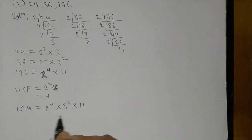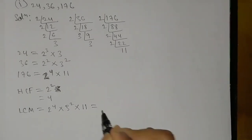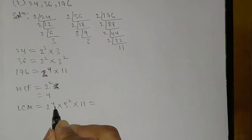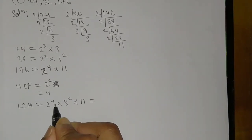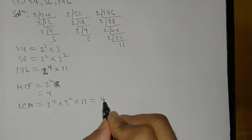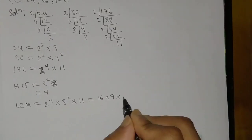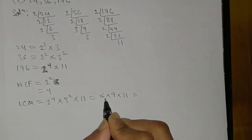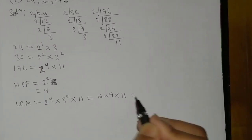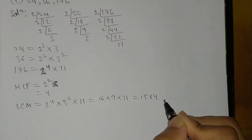Two to the power four, the better value is 16; two squared is 4, so sixteen into three squared nine into eleven. Sixteen into nine into eleven gives us one thousand five hundred eighty four.